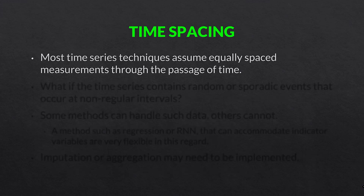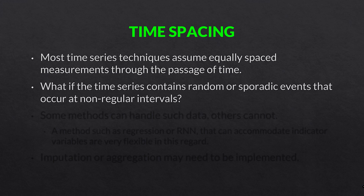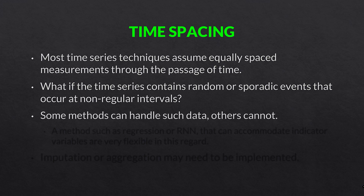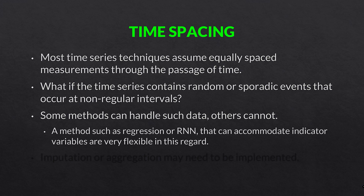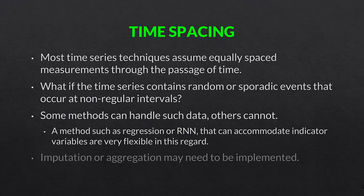Time spacing. Most time series techniques assume equally spaced measurements through the passage of time. Another thing to look at is what if the time series contains random or sporadic events that occur at non-regular intervals? Some methods can handle such data, others cannot. Methods such as regression or recurrent neural networks that can accommodate indicator variables are very flexible in this regard. Imputation or aggregation may also need to be implemented.